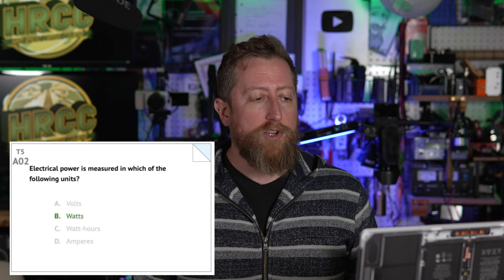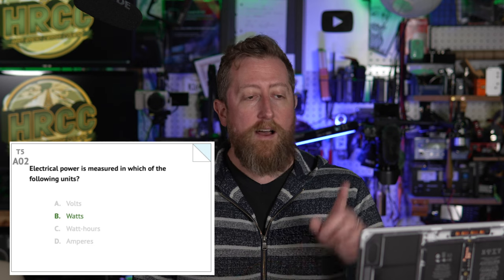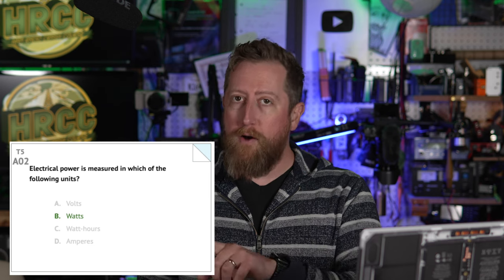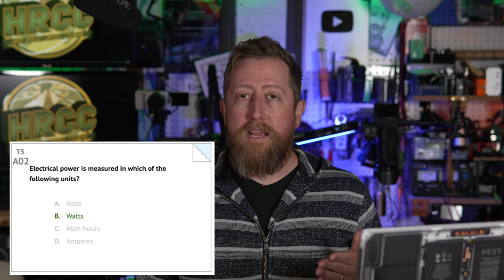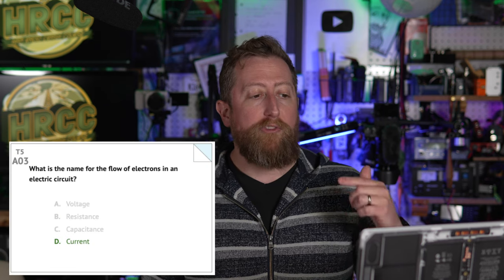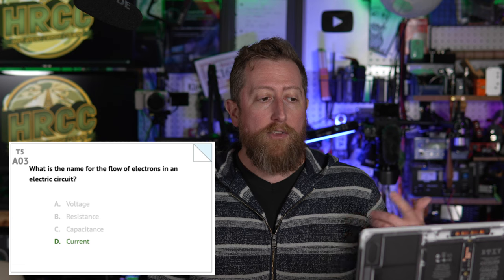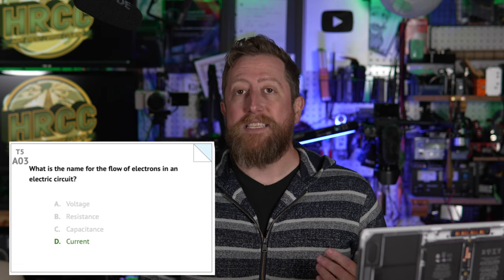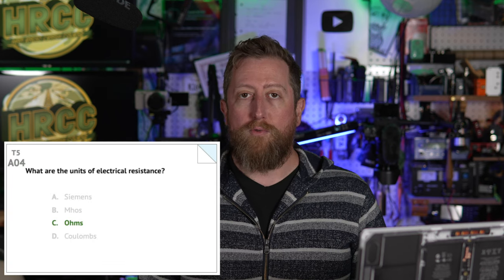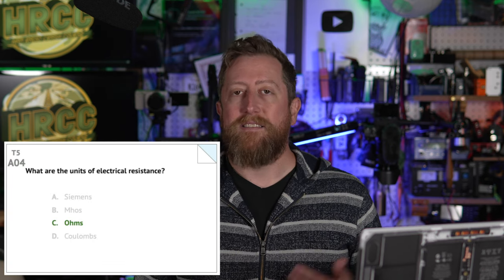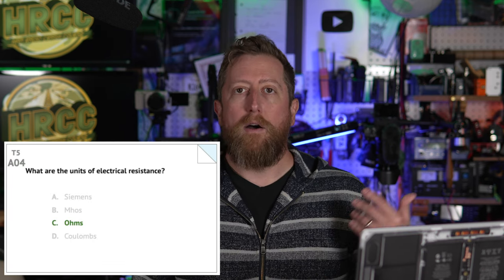Alpha 02: electrical power is measured in which of the following units? Electrical power is measured in B, watts. Alpha 03: what is the name of the flow of electrons in an electrical circuit? The answer is D, the current. Alpha 04: what are the units of electrical resistance? That is C, ohms. This is very important for electronics but also very important when you talk about your antenna, which is considered part of the circuit.